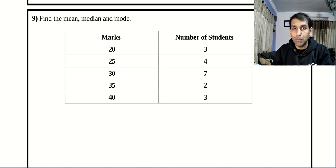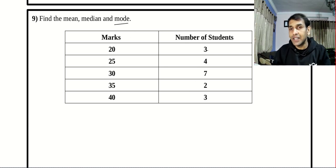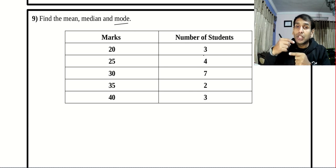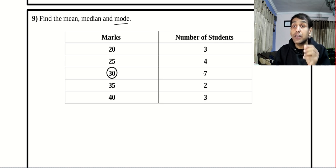For mode, this is so easy. What do you mean by mode? The most repeated value. I already found the mode is 30, because 30 repeats 7 times.